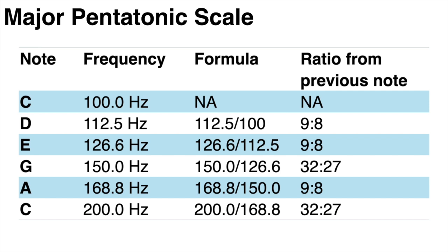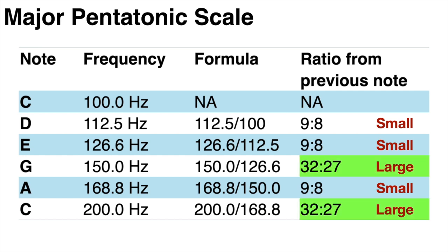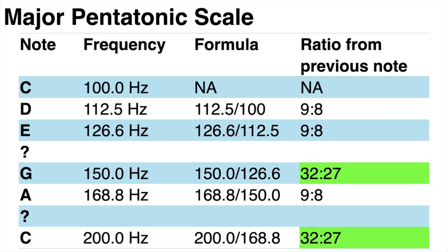Next let's compare the interval ratios between each successive note to see how big the gaps are between each note. Now if we look at this major pentatonic scale and compare the intervals between successive notes we find that we have two different sized intervals here. A smaller interval with a ratio of 9 over 8 and a larger ratio of 32 over 27. And notice that we have those two large gaps between the notes E and G and A and C. Now these are quite large leaps and make the scale sound a little disjointed. Wouldn't it be great if we could somehow fill in those gaps to make the interval between these notes a little bit smaller?